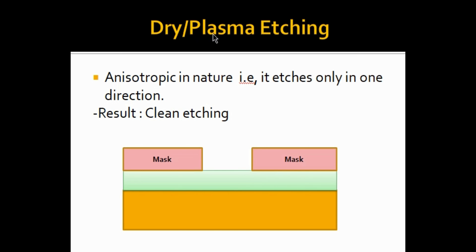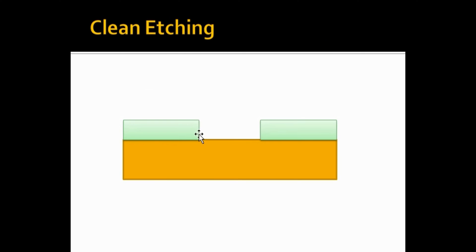Plasma etching is anisotropic in nature, meaning it etches only in one direction — the vertical direction. So we achieve very clean etching. That is why we go for plasma etching.